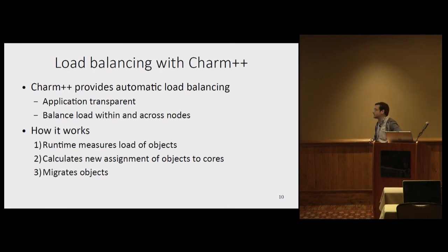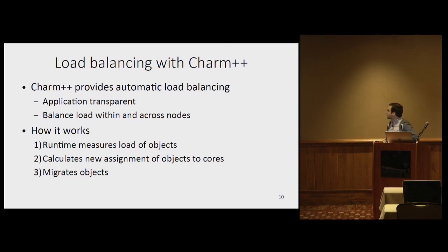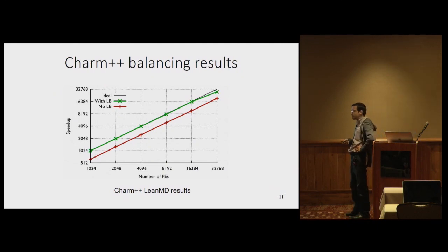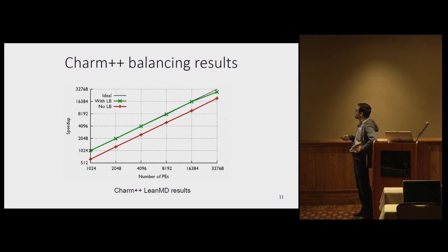Charm++ can do load balancing automatically in an essentially application-transparent way. It balances load within and across nodes. The runtime measures the load of objects — your parallel tasks based on your decomposition — calculates a new assignment of those objects to cores, and then migrates them. The improvement you get depends on the application. As an example with LeanMD, a molecular dynamics mini-app that emulates the force calculation of NAMD, with load balancing we get very close to ideal load balancing, achieving almost a 2x improvement and linear scaling.